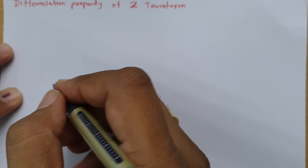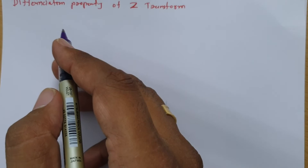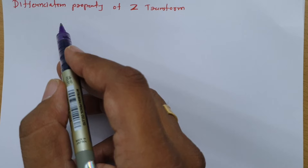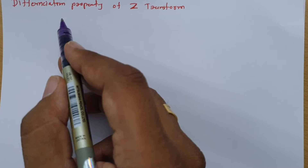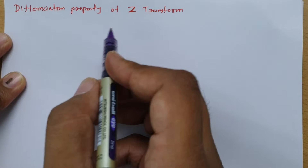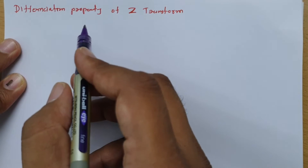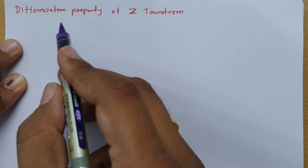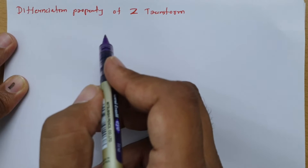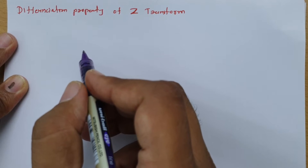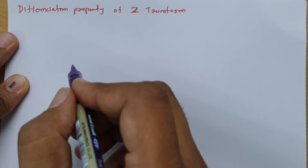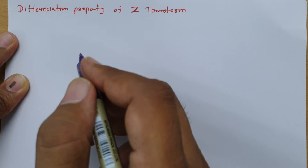Welcome to the Signal and Systems lecture series. In this session, I will explain the differentiation property of Z-transform. First, I will explain what the differentiation property is, and then we will solve one complicated example of Z-transform.